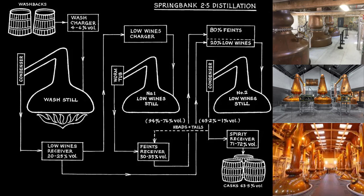From there we go on to the next still, where we take the low wines, heat it again, and what we're trying to do is increase the alcohol content. We would have another ABV measurement and cut at 30 to 35 percent. Once we've got that, we go on to the final still — taking a percentage of faints and a percentage of low wines — and we're looking for a cut above 63 percent, ideally around 71 percent to go into the spirit receiver.